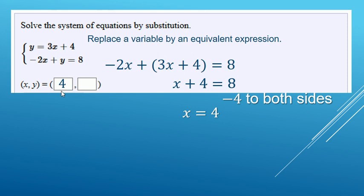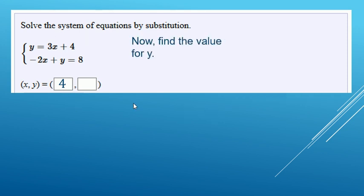So that makes 8 minus 4 makes positive 4. There's the value for x that makes both equations true. Now we need to find the value for y. What does y equal? y equals 3x plus 4.